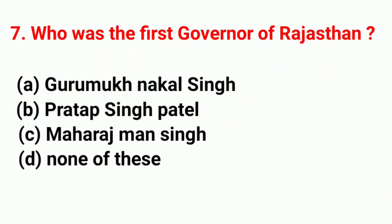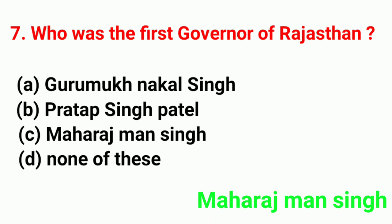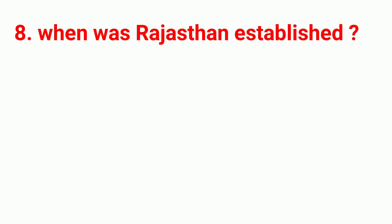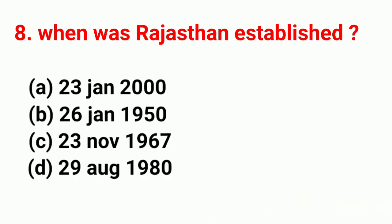Who was the 1st governor of Rajasthan? Right answer is Maharaj Man Singh. When was Rajasthan established? Right answer is 26th January 1950.